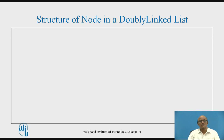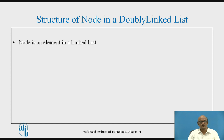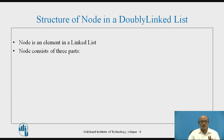Now let us see the structure of a node in a doubly linked list. As we know, in the singly linked list we have two parts — that is the data part and the address part for a particular node. But in the doubly linked list, a node consists of three parts instead of two. In singly there were two parts; in doubly linked list there are three parts.